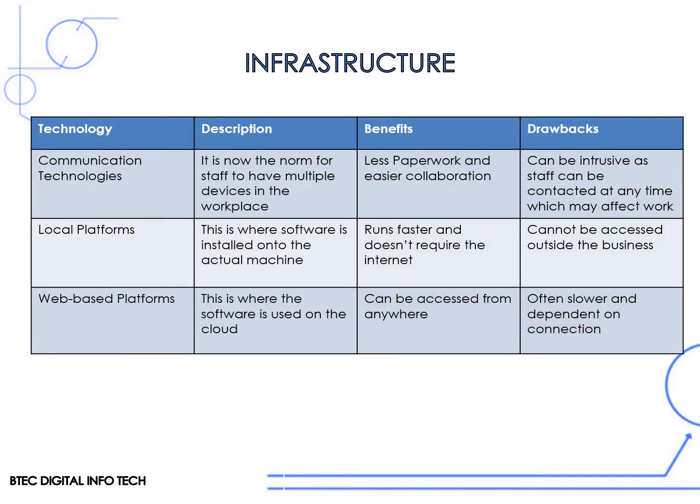When making decisions about infrastructure, there can be benefits and drawbacks for the organization. For example, with communication technologies, it's now the norm for staff to have multiple devices in the workplace. The benefits are that there's less paperwork and it's easier for workers to collaborate, however it can be intrusive as staff can be contacted at any time. Local platforms, where software is installed onto an actual machine, run faster and don't require the internet, however they cannot be accessed outside the business.